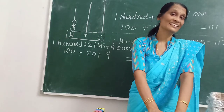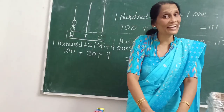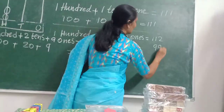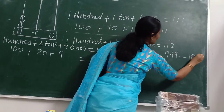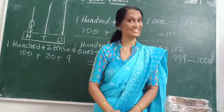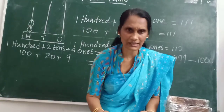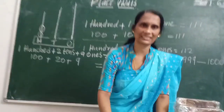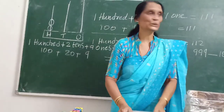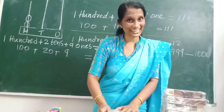Then what does the number become if there are 10 hundreds? It will be 1000. Because 999 — the next number — is 1000. So in 1000, how many hundreds are there? 10 hundreds are there. Like that, 10 hundreds make 1000. We will call the number 1000.